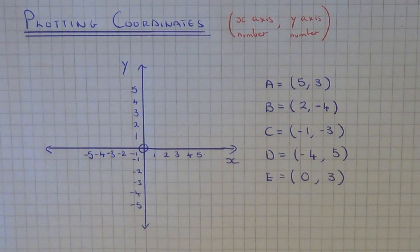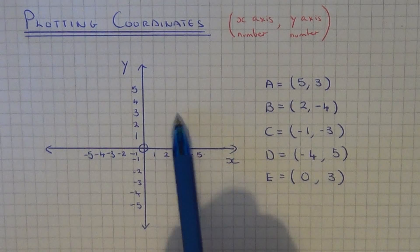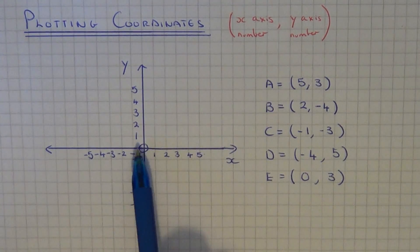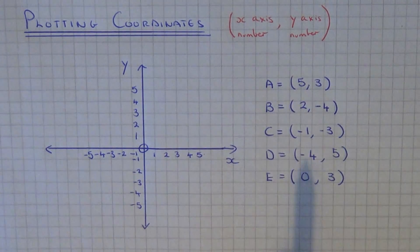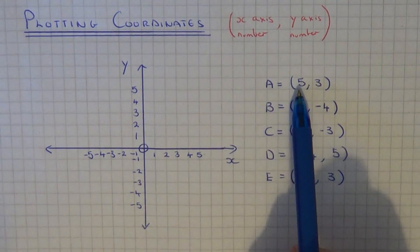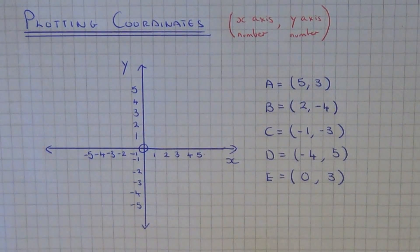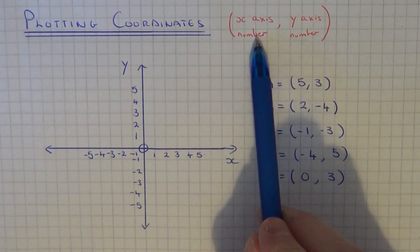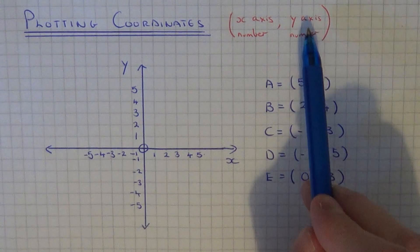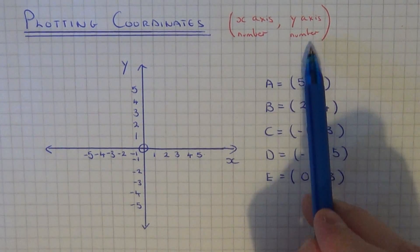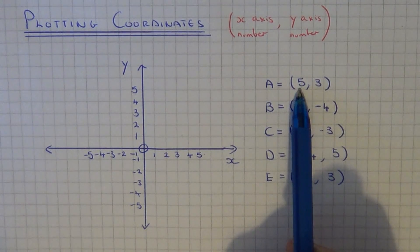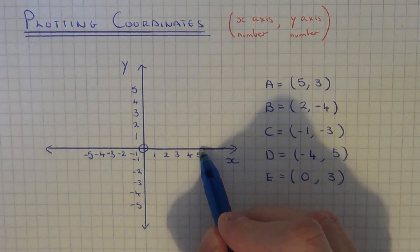Today I'm going to show you how to plot some coordinates on a coordinate grid where you have four quadrants, so we have positive and negative values. So coordinate A then is — what you need to remember is that the first digit in the coordinate is the x-axis number and the second digit is the y-axis number. So to plot it, first of all I'm going to go to x equals five on the x-axis.